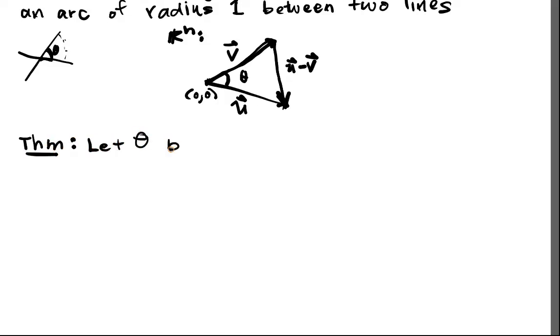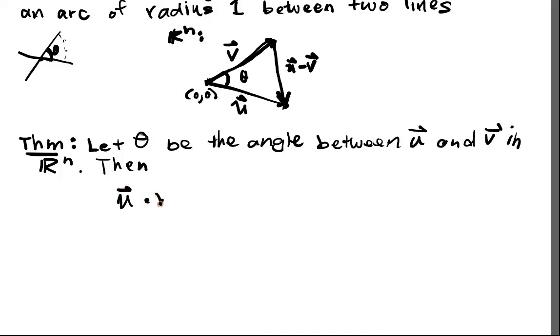Let theta be the angle between u and v in Rn. Then, and of course we're talking about angles and radians, then u dot v. So the inner product.